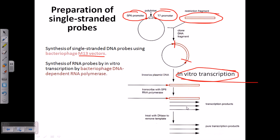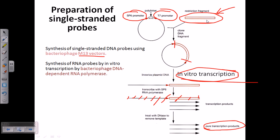Using SP6 RNA polymerase, we produce a large number of mRNA transcripts. We then treat with DNase to digest the remaining DNA segments, leaving only the pure RNA transcription products. Since we have only a few copies of our desired restriction fragment, we need to amplify it — for this amplification, we use M13 vectors. We can also use different types of bacteriophage DNA-dependent RNA polymerases to produce a large number of RNA probes.